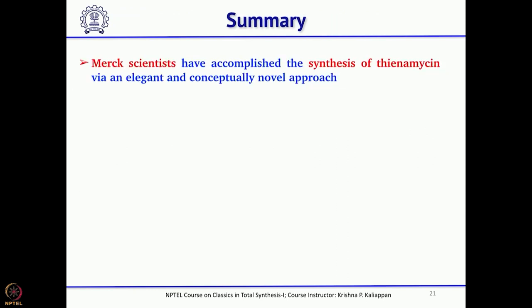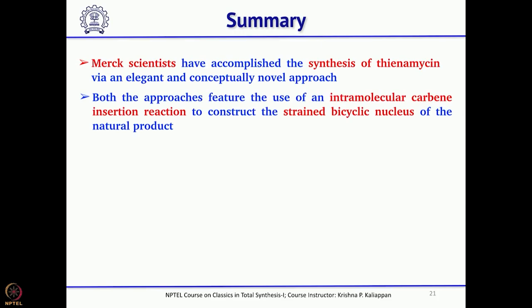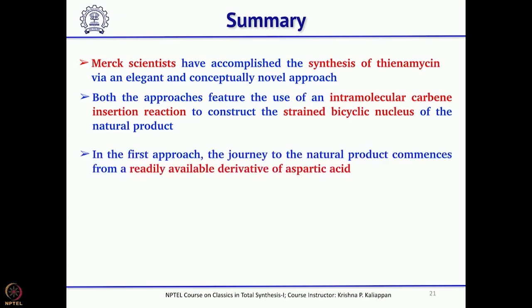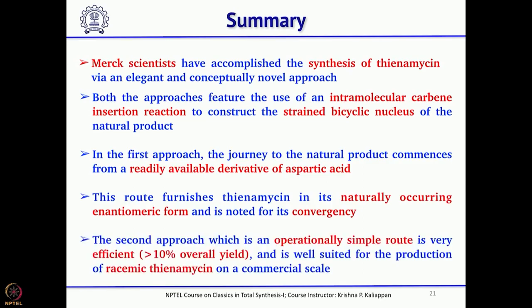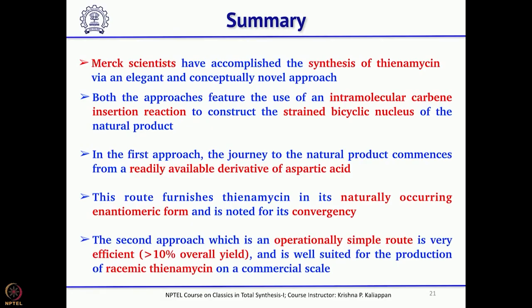To summarize, the Merck scientists reported two total syntheses of thienamycin. The first is enantiospecific, starting from commercially available L-aspartic acid as the chiral amino acid to give optically active thienamycin. The second is a racemic synthesis using intramolecular and intermolecular Mitsunobu reactions as key steps, with better overall yield. In both cases, intramolecular carbene insertion was the key reaction to construct the 5-membered ring. Thank you.